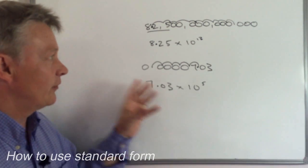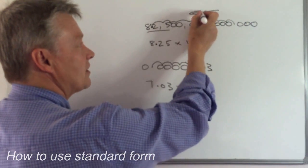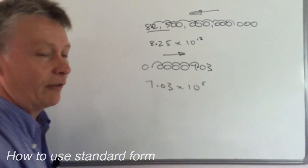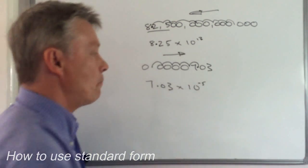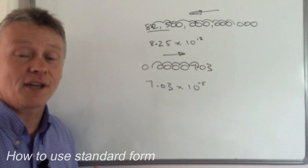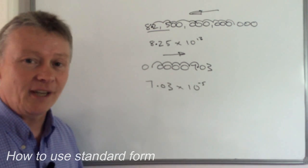Now, the only thing that remains with this is that rather than moving the decimal point in this direction, I've moved it in this direction. So I've got to tell people I've done that. And I put simply a minus there. 7.03 times 10 to the power of minus 5 is exactly the same as this number here.